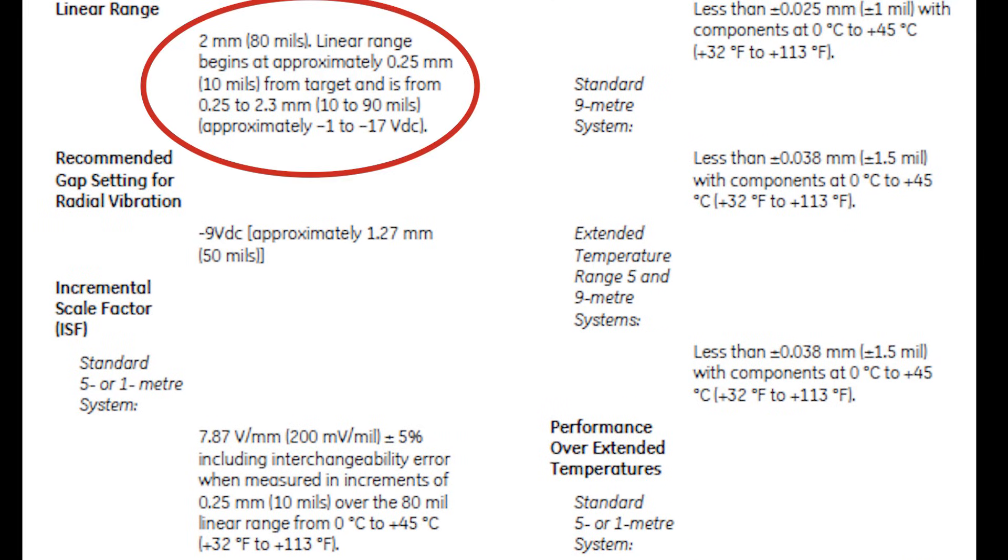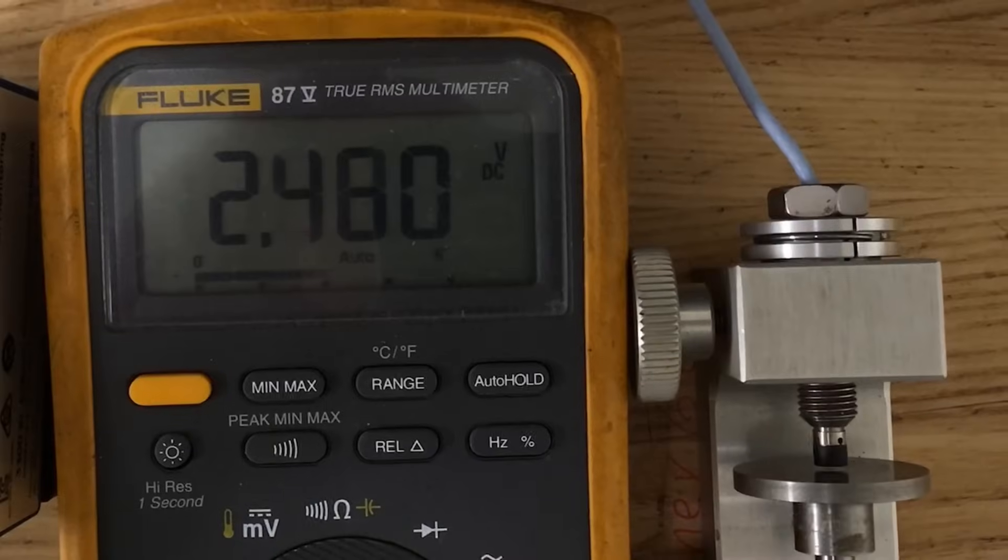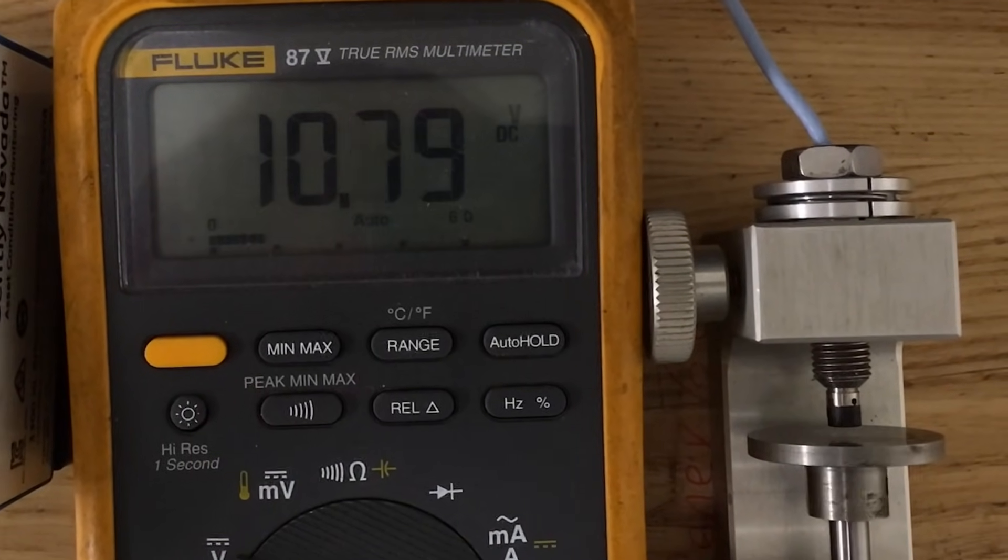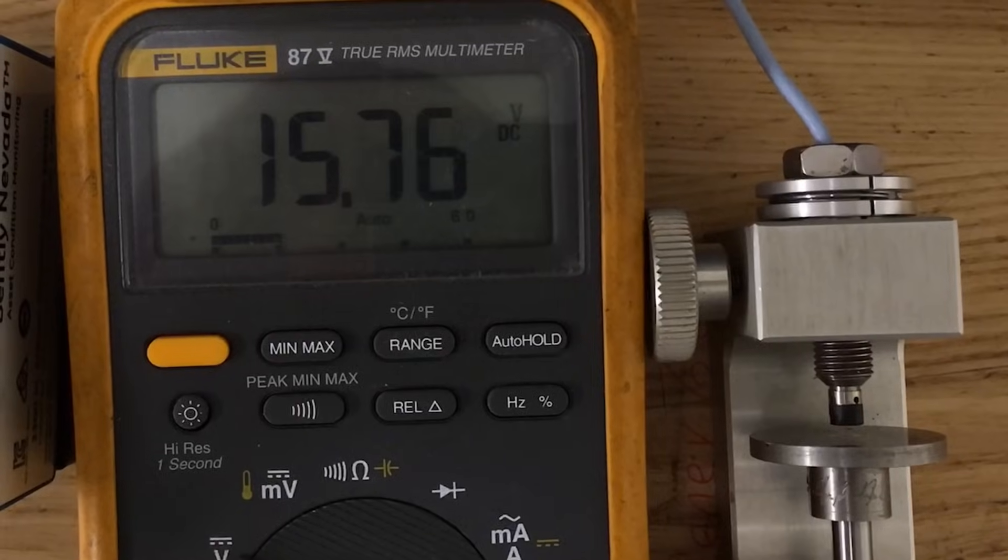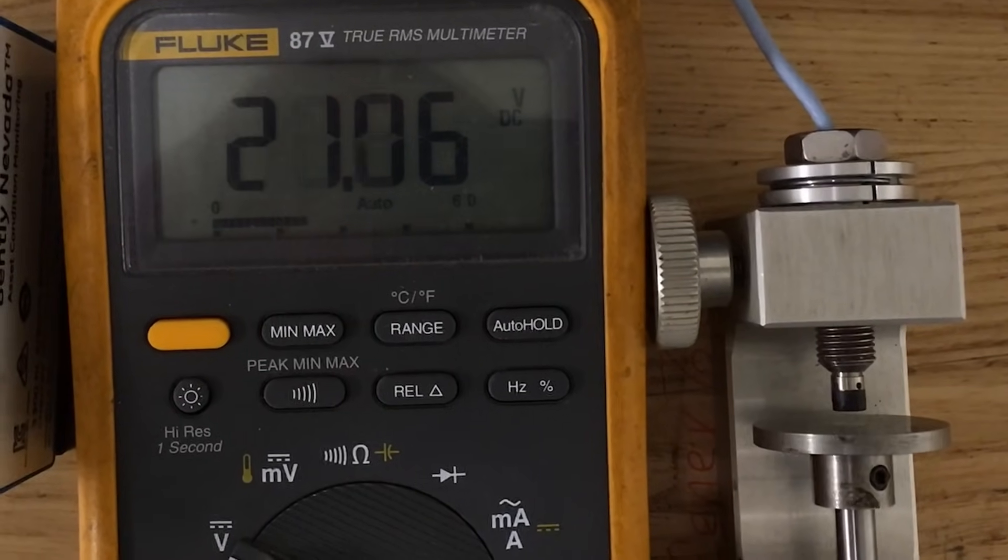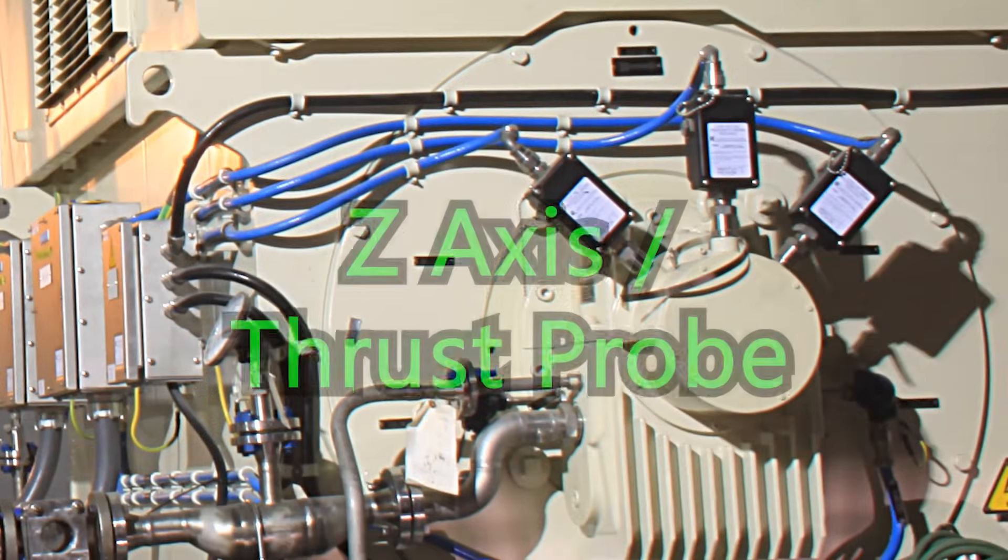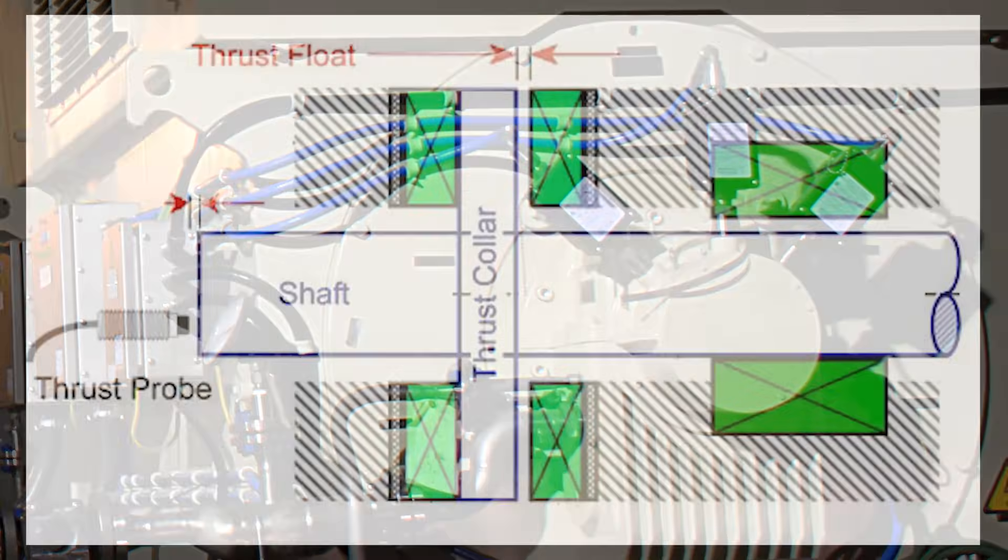The DC output voltage of the proximitor is referred to as gap voltage. As the gap voltage changes, the amount of voltage change can be used to track the movements of metal objects.